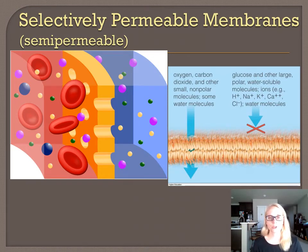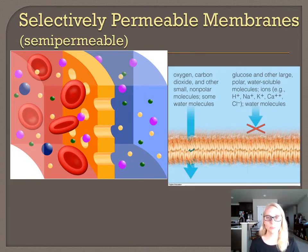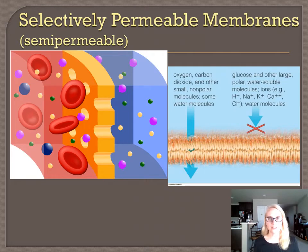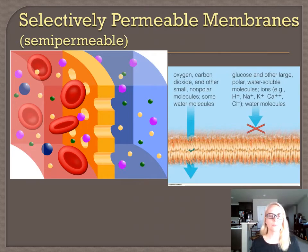One of the first terms we need to understand about phospholipids is selective permeability, sometimes called semipermeable. It means the membrane does not allow everything to cross it — it's like a gatekeeper. It prevents certain things from coming through but allows other things to go through.